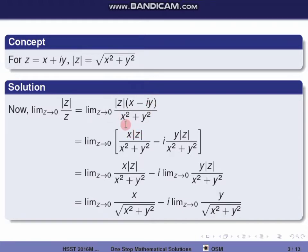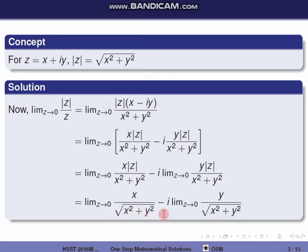So the limit z tends to 0 of mod z divided by x squared plus y squared can be split as: limit z tends to 0 of x by square root of x squared plus y squared, minus i times limit z tends to 0 of y by square root of x squared plus y squared.